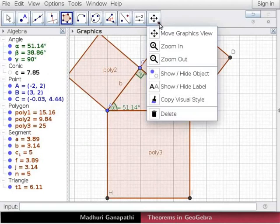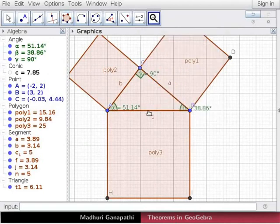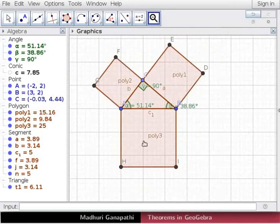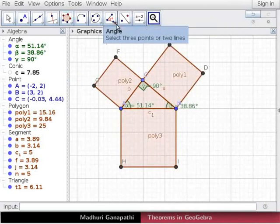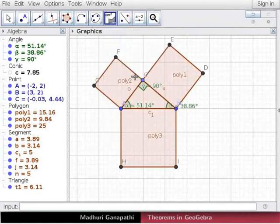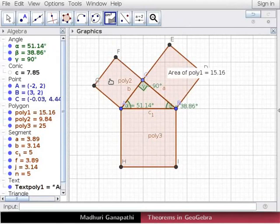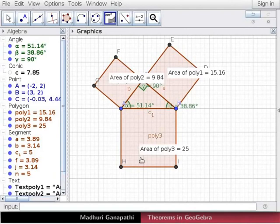Now we will use zoom out tool to see the diagram clearly. Now we will find the areas of these squares. Click on the area tool and click on poly 1, poly 2 and poly 3 respectively. The areas of the respective squares are displayed.